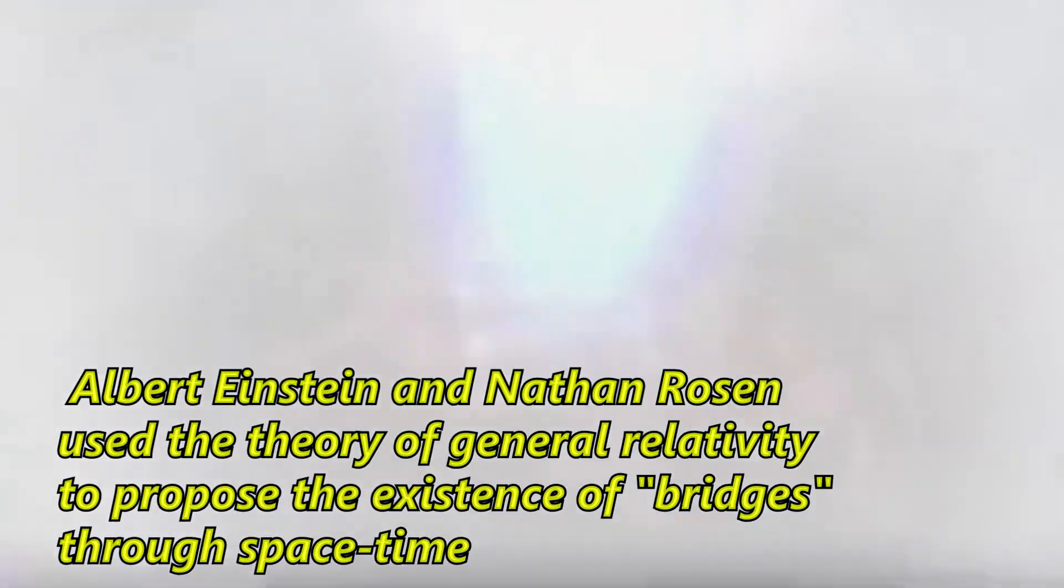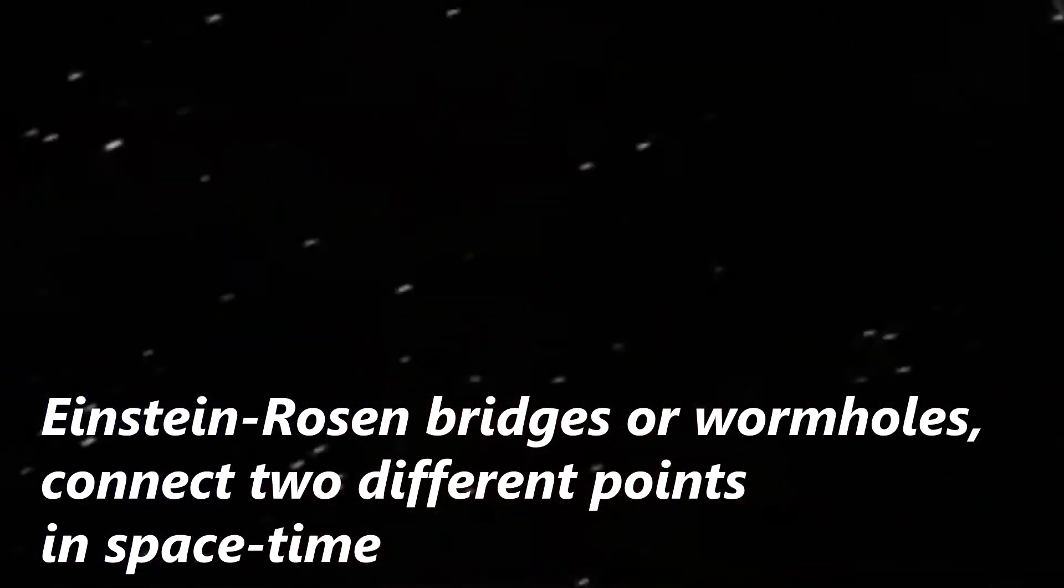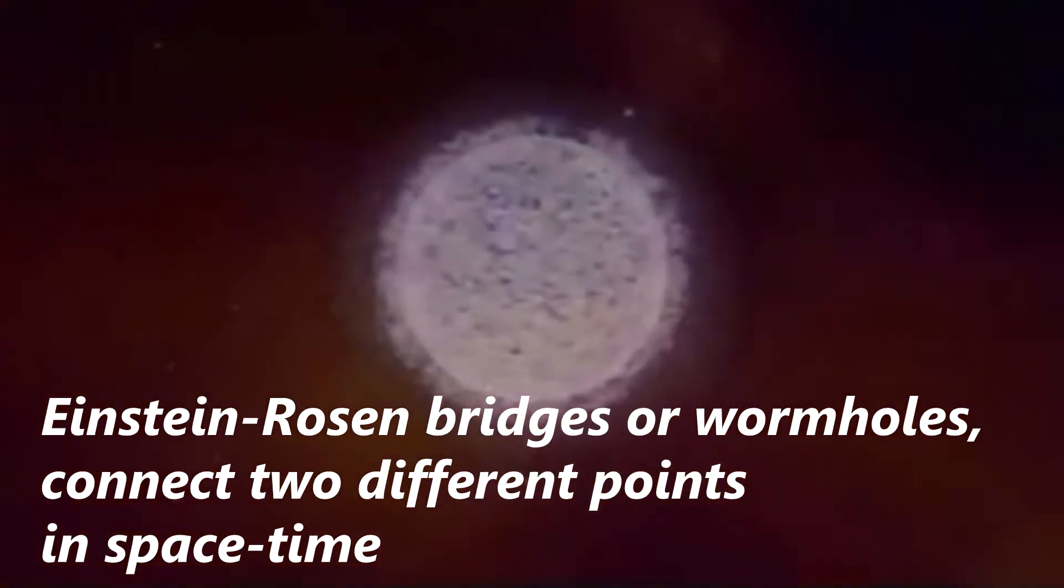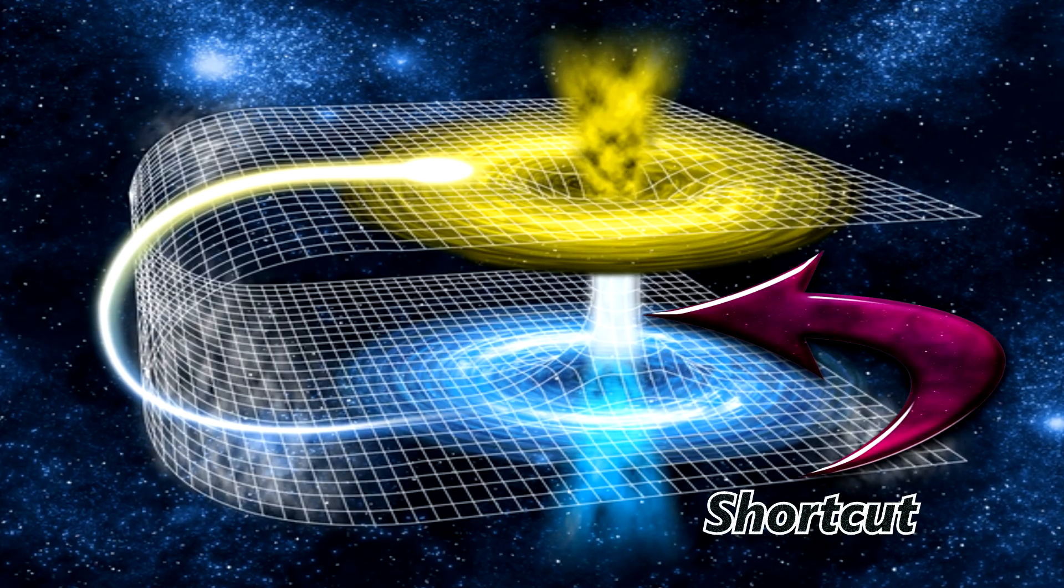In 1935, physicists Albert Einstein and Nathan Rosen used the theory of general relativity to propose the existence of bridges through space and time. These paths, called Einstein-Rosen bridges or wormholes, connect two different points in spacetime, theoretically creating a shortcut that could reduce travel time and distance.